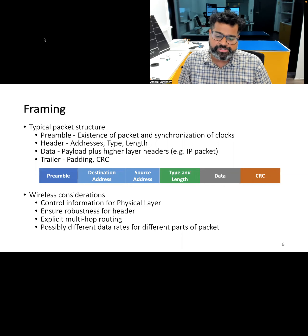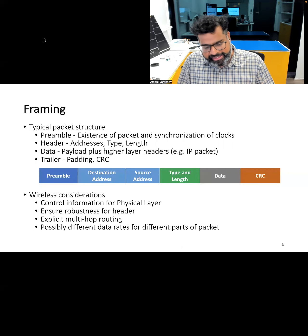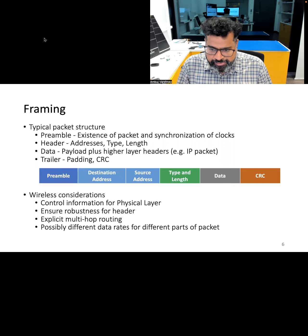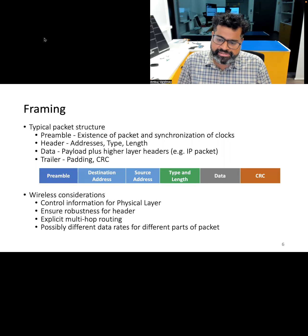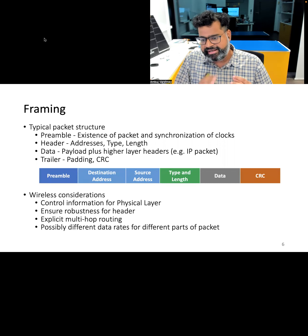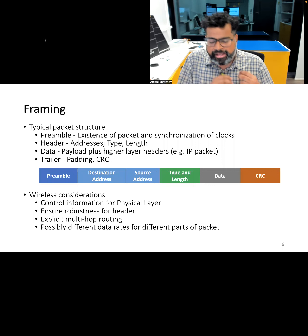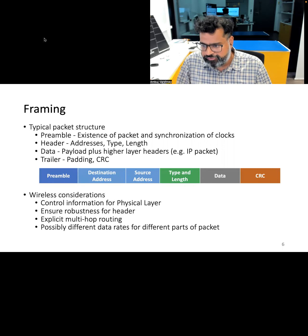The frame also includes trailing fields, which contain error detection mechanisms such as CRC to identify any errors introduced during transmission. The frame design takes into account factors like multi-hop routing and data rate support. Thus, careful consideration must be made when deciding the various fields that become part of the frame.